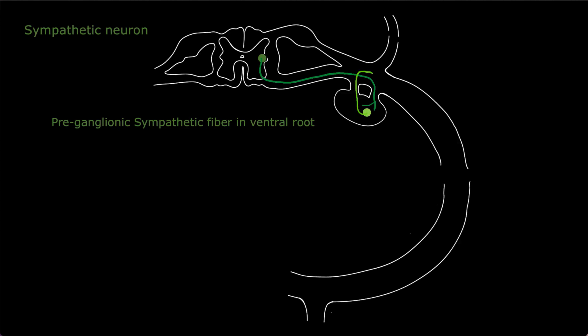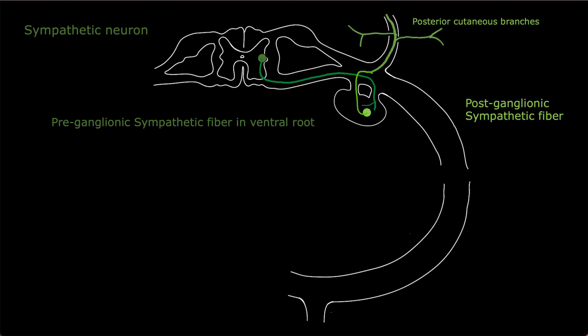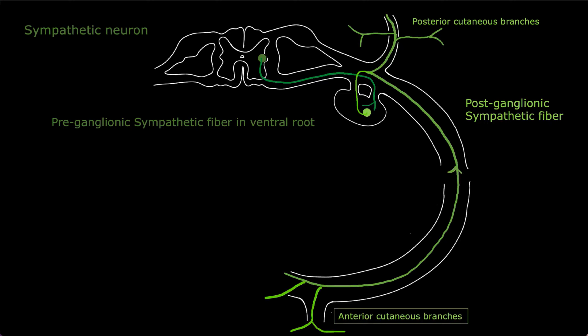When the spinal nerve emerges from the intervertebral foramina, it bifurcates into a dorsal ramus and a ventral ramus. The sympathetic fiber runs with both the dorsal and ventral ramus. Its destination is to supply smooth muscle, which is widely distributed throughout. These postganglionic fibers travel backward and forward, giving branches that control smooth muscles throughout.